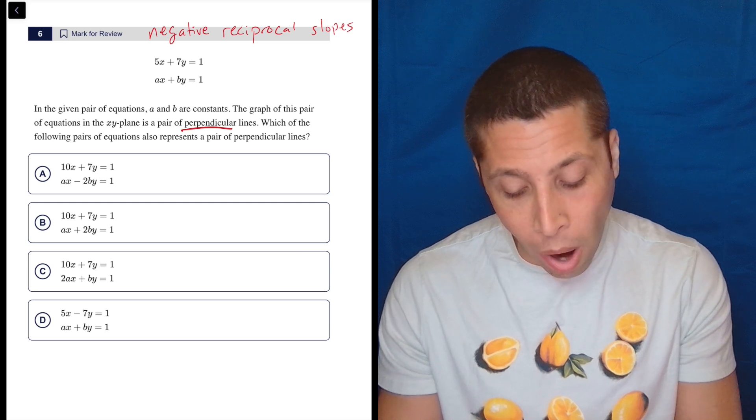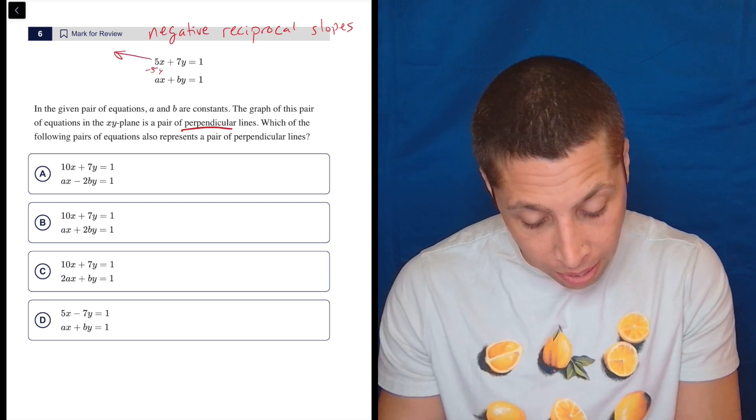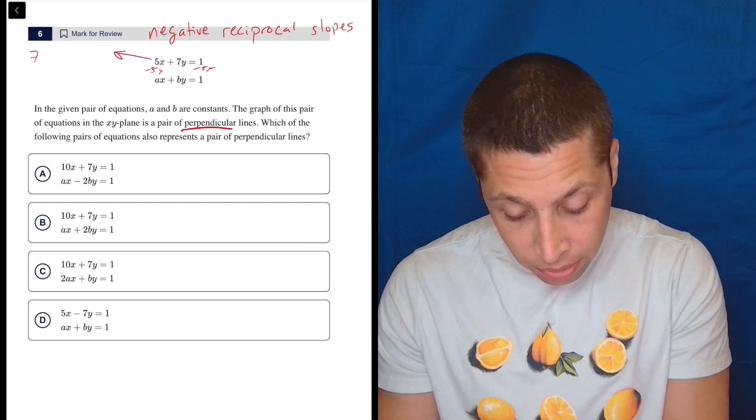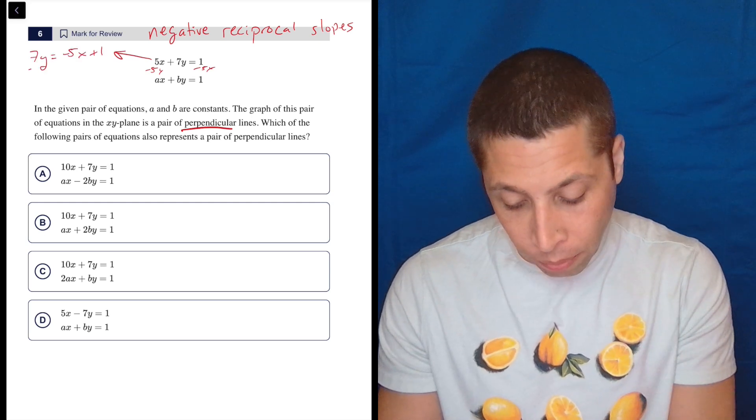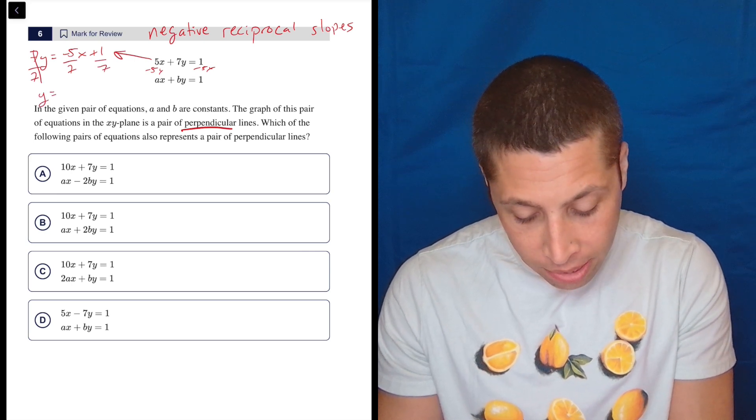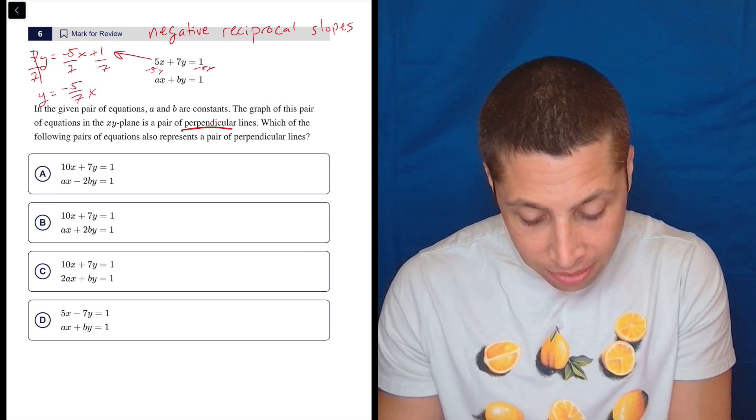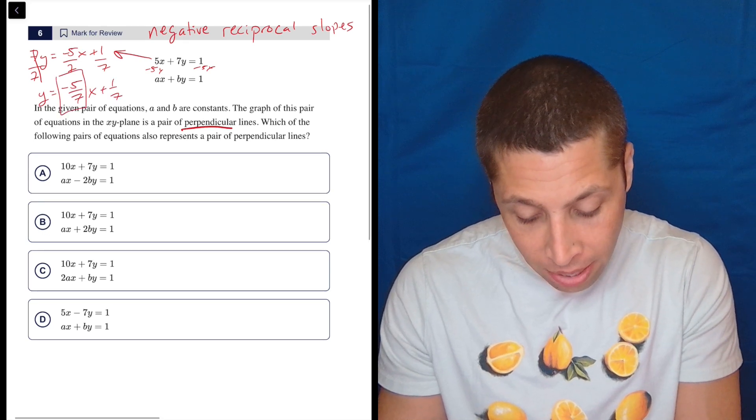So let's get this into y equals mx plus b format. So we're going to do that for this one. So I'm going to subtract the 5x, subtract the 5x. So I have 7y is equal to negative 5x plus 1. I really don't care about the 1. I really just want to get the slope. So if I divide by 7, I get y is equal to negative 5 7ths x plus 1 7th, and it's the negative 5 7ths that I care about.